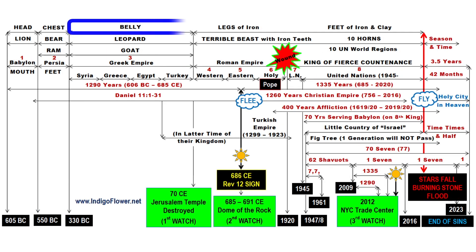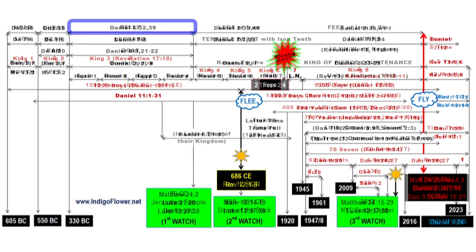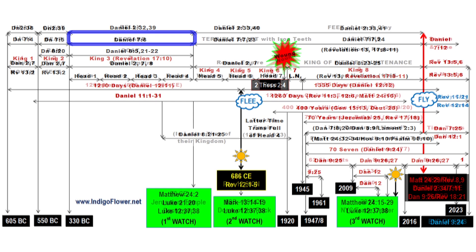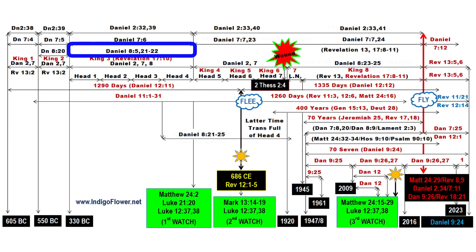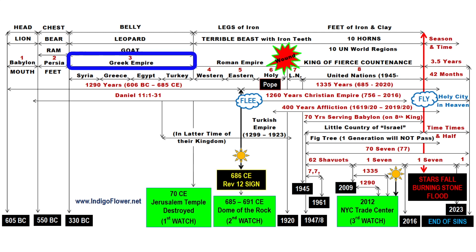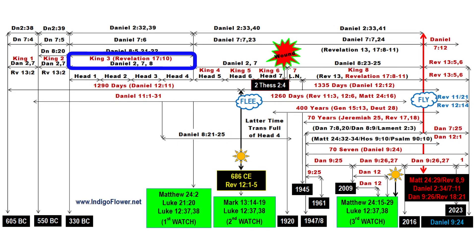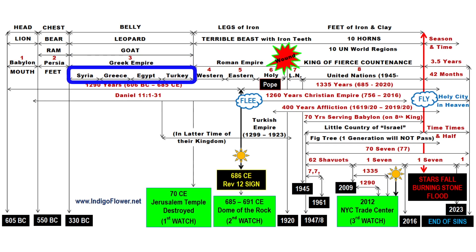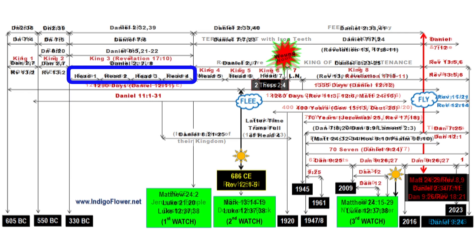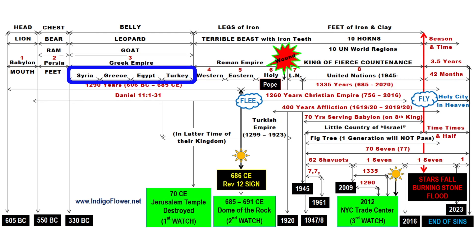Next we have the Belly, as explained in Daniel 2 verses 32 and 39. And that is also the Leopard in Daniel 7:6, and the Goat of Daniel 8 verses 5 and 21. That was the Greek Empire and the First King, Alexander the Great, as explained in Daniel 8:21. That was also the Third King of Revelation 17:10. Daniel 8:22 explains that Alexander's kingdom was split into four sections — the four heads of the Leopard. The first was the Seleucid Empire, which included modern day Syria. The second was Antigonid Macedon, which is modern day Greece. The third was the Ptolemaic Dynasty, which is modern day Egypt. And the fourth was Adalid Anatolia, in modern day Turkey.